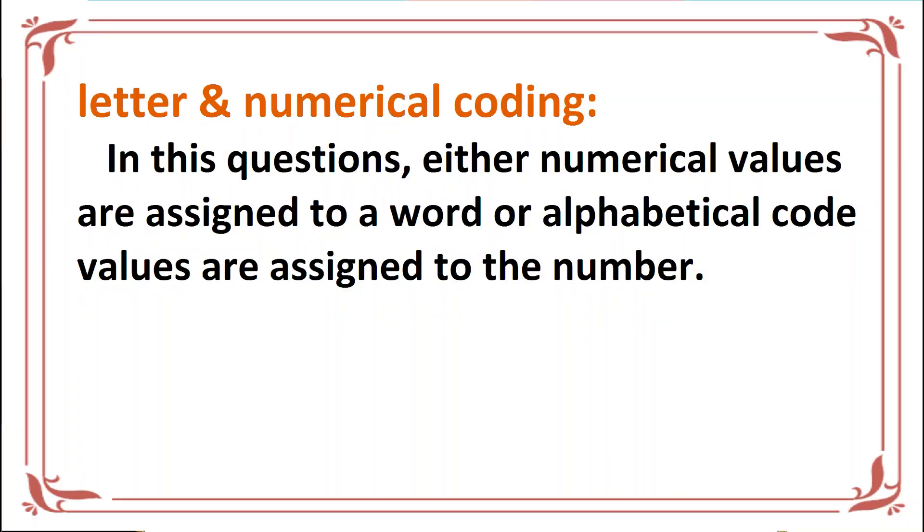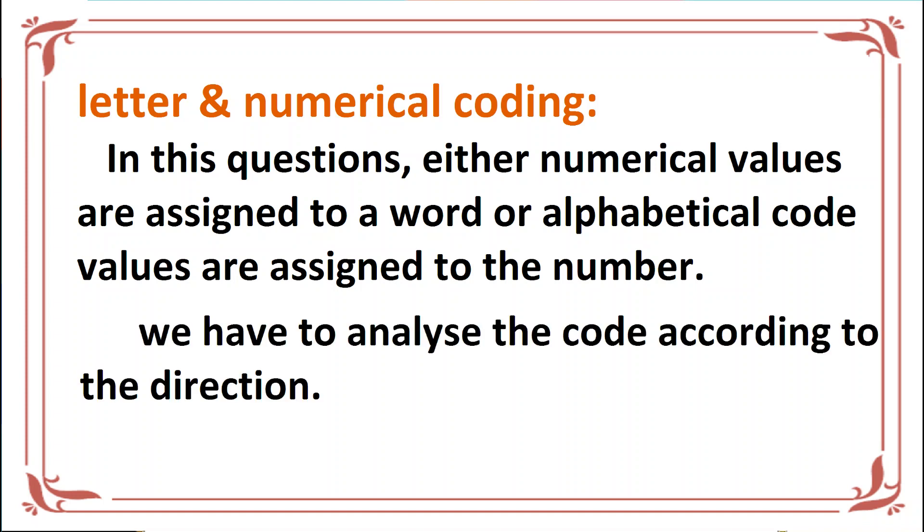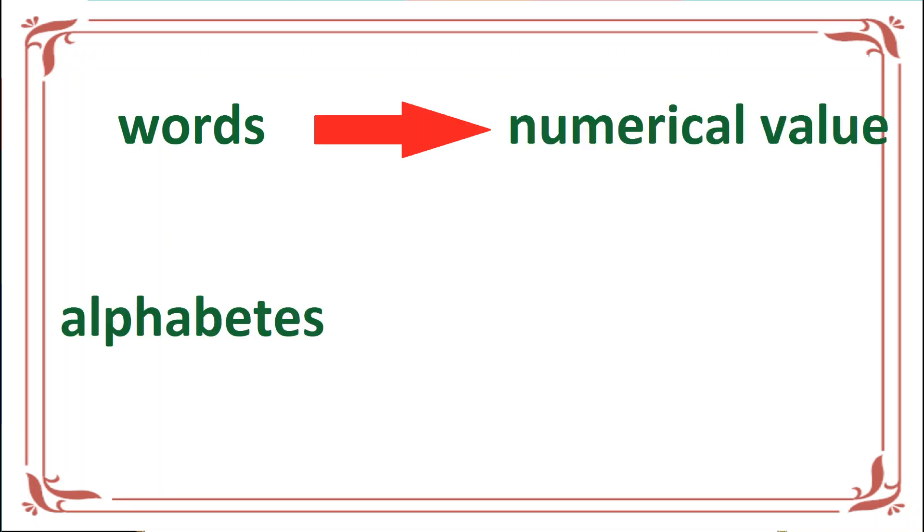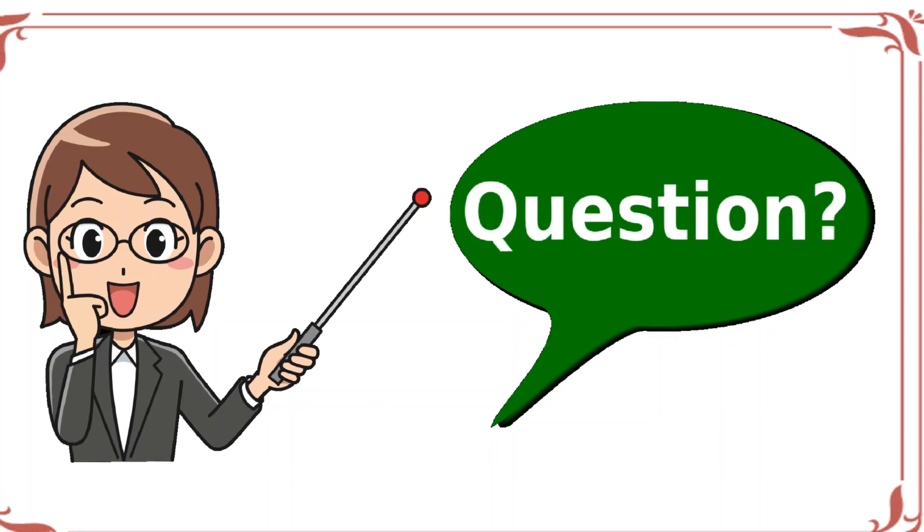So what happens in this type of question? Either numerical values are assigned to a word or alphabetical code values are assigned to a number. In the words, we give them a numerical value. Numerical value means to assign a number, to denote the number. So let's see.